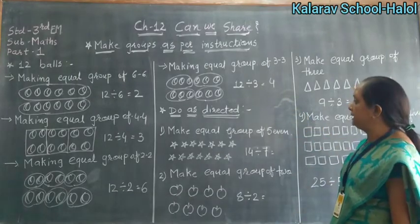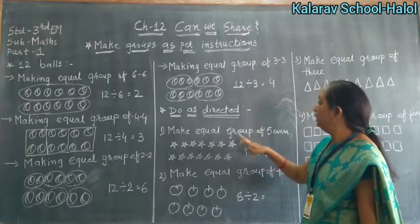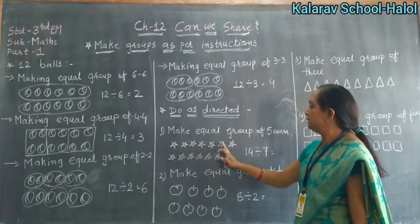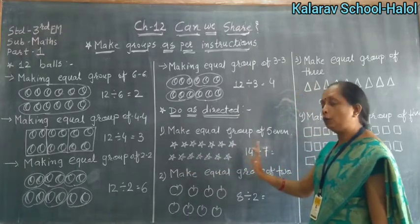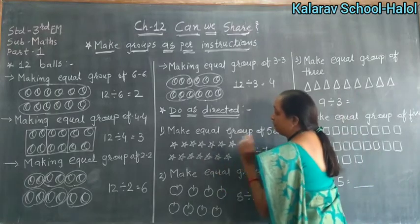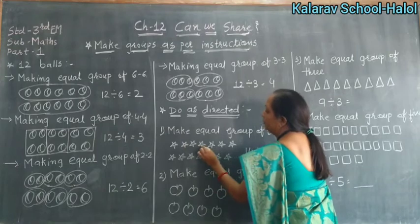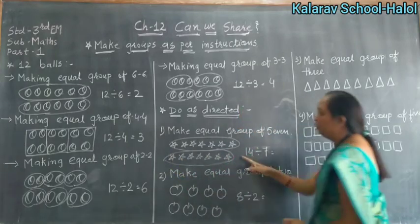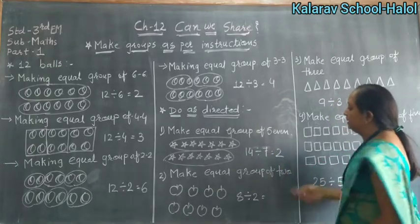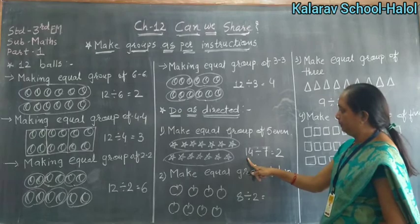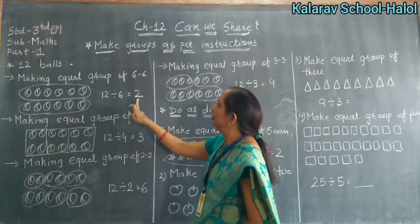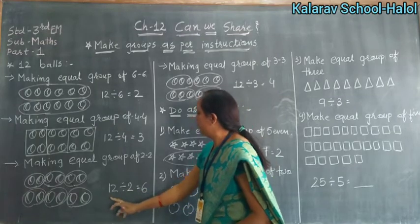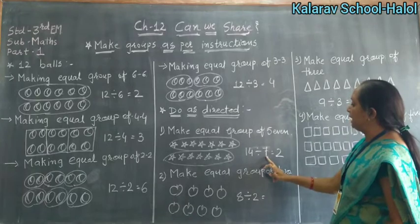Now we will do some more examples. Make an equal group of 7. Here we have total stars: 1, 2, 3, 4, 5, 6, 7, 8, 9, 10, 11, 12, 13, 14 — total 14 stars. 7 ka group banayenge. So 1, 2, 3, 4, 5, 6, 7 — and again 7. So total group how many? 2 groups. So children: 7 times 2 is 14. 6 times 2 is 12. 4 times 3 is 12. 2 times 6 is 12. 3 times 4 is 12. 7 times 2 is 14.